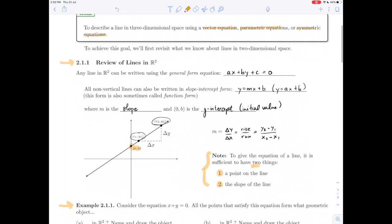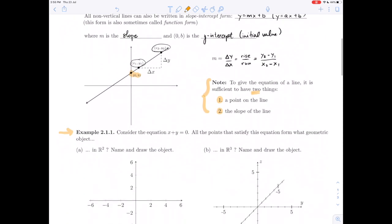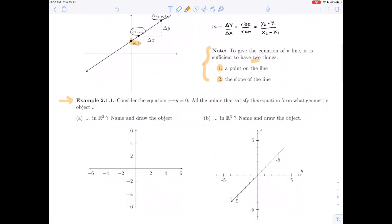Let's look at example 2.1.1. This asks us to consider the equation x + y = 0. All points that satisfy this equation form what geometric object, and here I'm told to consider this first in two-dimensional space, and then in three-dimensional space.